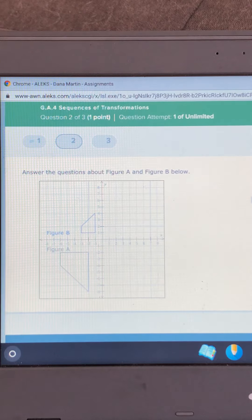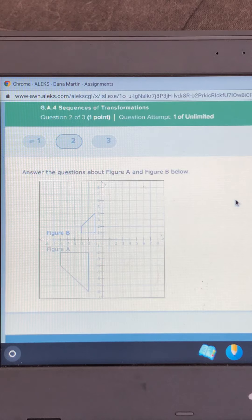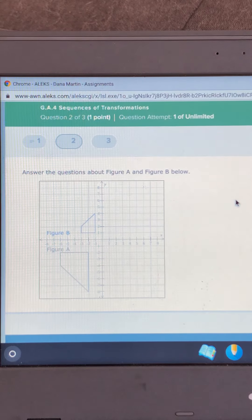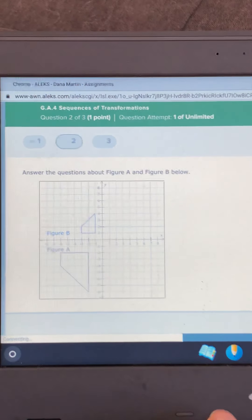So the biggest thing to understand is you're going to take each shape and the transformations are going to happen twice. There's going to be a sequence. We're going to do two things to the shape.